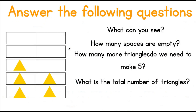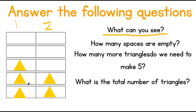Answer the following questions. Can you see the table? Good job. And what do you see in the table? We can see triangles. This table has two columns — one and two. Let's have a look at our questions. What can you see in column one? In column one, I can see three triangles. Can you see three triangles? Great job. What can you see in column two? I can see two triangles.